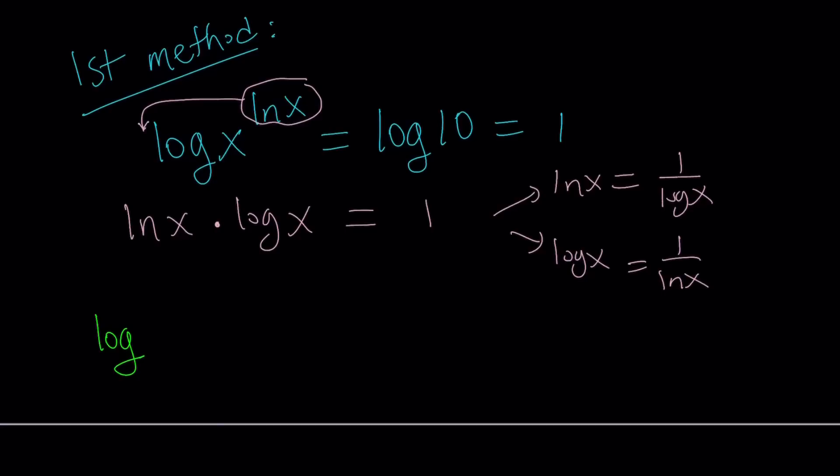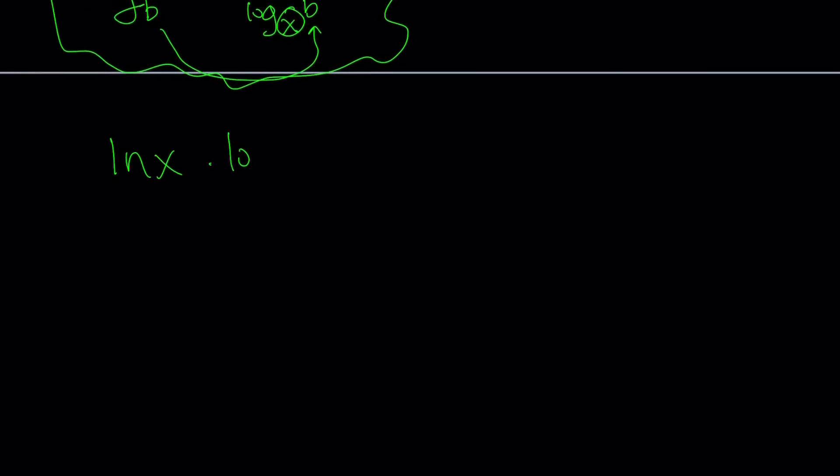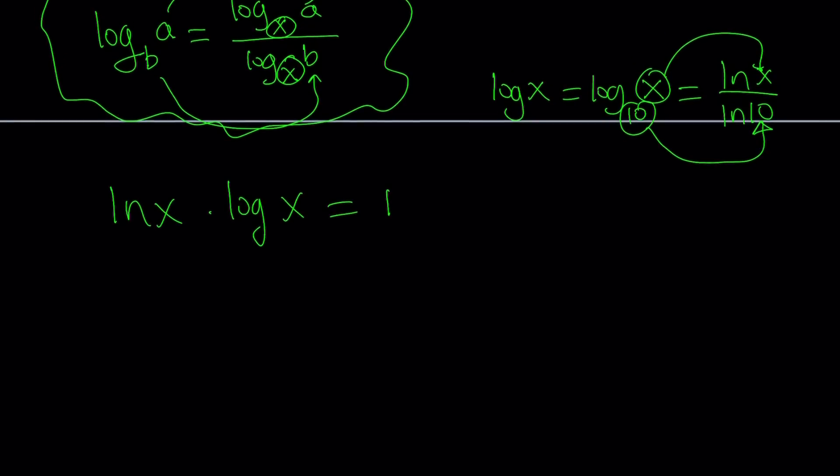If you have something like log a with base b, and let's say we want to convert it to base x, we can write it like log a over log b with the same base. So a goes here, and b goes here. And notice that these two bases are the same. So this is called change of base formula. Let's go ahead and see how it can be applied to our situation. Since I'm going to use ln, log x basically is log x with base 10. So now this turns into ln x over ln 10. Notice that x goes here, and 10 goes here.